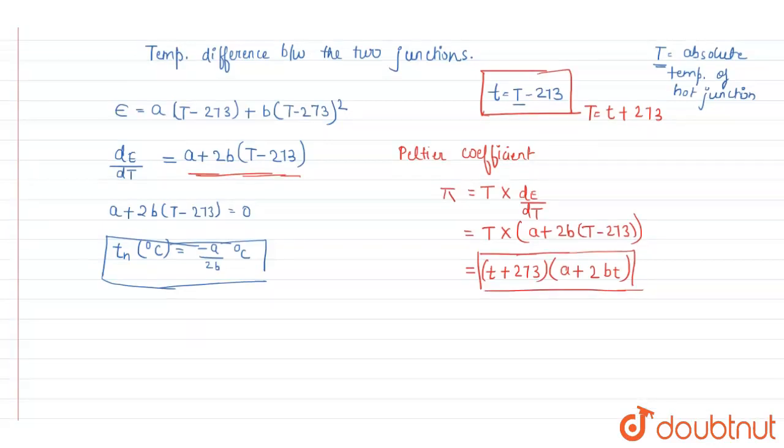Thomson coefficient. What is Thomson coefficient? Thermo emf per unit temperature differentiation is Thomson coefficient, and we denote that by sigma. So we know that sigma is equal to T into d squared e upon dt squared.